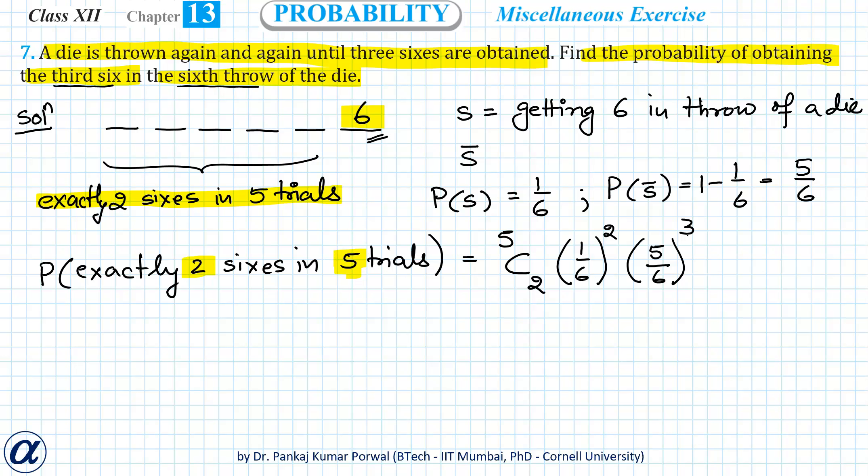So this I can simplify as 5C2, I can write as 5×4 divided by 1×2, times 1/6 squared will be 36, times 5 cubed will be 125 divided by 6 cubed will be 216.